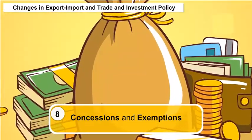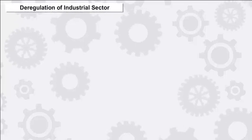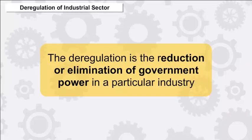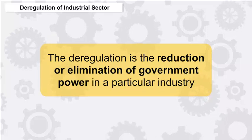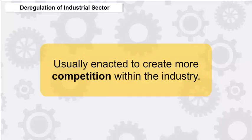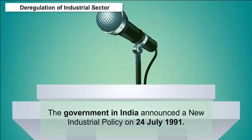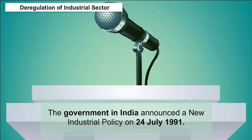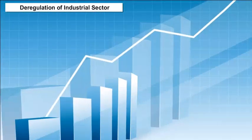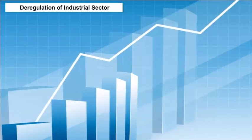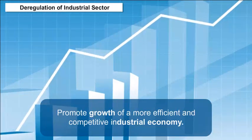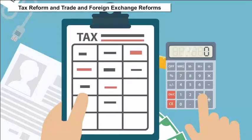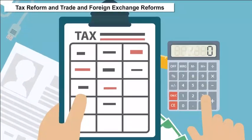Deregulation of Industrial Sector: Deregulation is the reduction or elimination of government power in a particular industry, usually enacted to create more competition. The Government of India announced a new industrial policy on 24 July 1991, which sought substantially to deregulate industry so as to promote growth of a more efficient and competitive industrial economy.